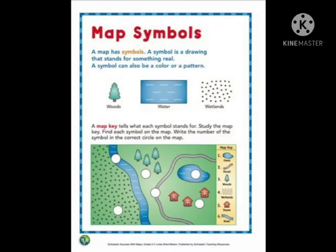Now let us study about the map symbols. The small pictures that represent different features on a map are called symbols. For example, a forest is shown with trees, mountains are shown with triangles, etc. That's all about this chapter. Thank you.